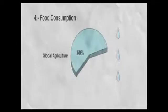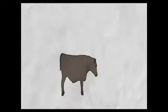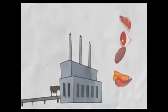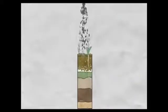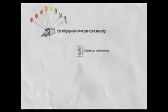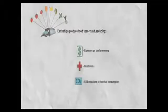Four, food consumption. Global agriculture uses 60% of the total fresh water in the world. Food production today has to be technified to meet the large demand, resulting in burning fossil fuels, using chemical nutrients and pesticides, therefore emitting greenhouse gases, polluting soil, water, and the product itself. Moreover, food is regulated by the economic market, making you vulnerable to shifts in prices and availability. Earthships produce food year-round, reducing expenses in family economy, health risks associated to pesticides and contaminants where food is grown, CO2 emissions by less fuel consumption, for example transportation for food imports, and water consumption for food production.